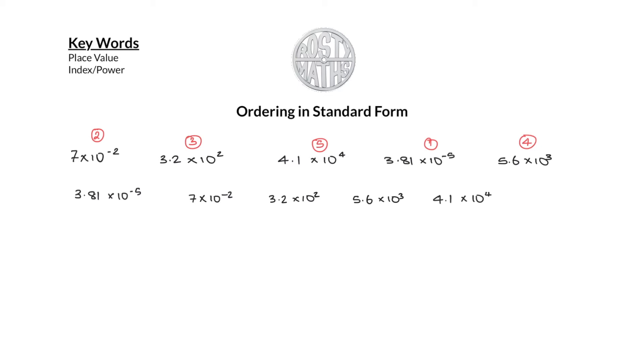So the first thing I will do, 7 times 10 to the power minus 2 means that I need to move the number two places that way, so this number is actually 0.07. And then 3.2 times 10 to the 2 means move it two places that way, so that's going to be 320. And then the next one, this is times 10 to the 4, so move it one two three four, so that's going to be 41,000.